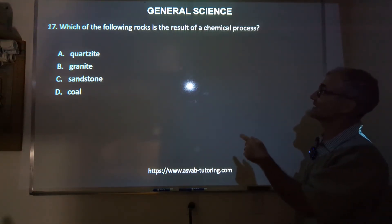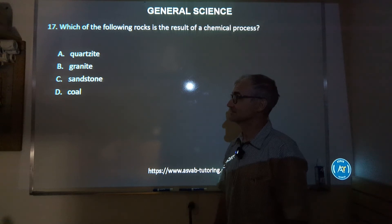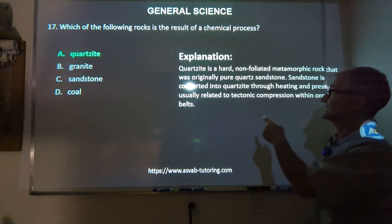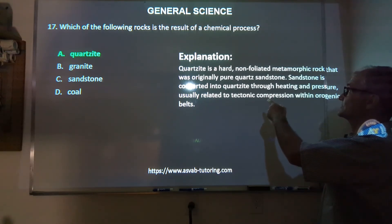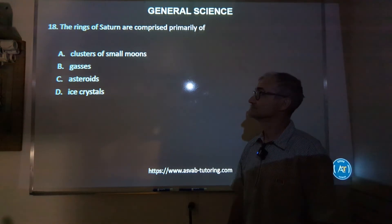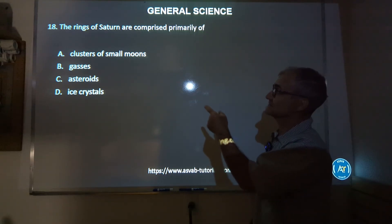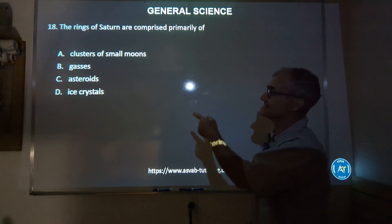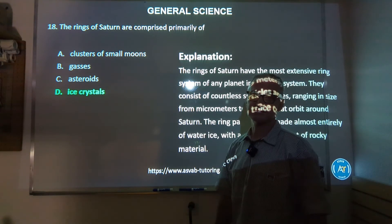Number 17: which of the following rocks is the result of a chemical process? Quartzite, granite, sandstone, or coal? Correct answer: quartzite. Quartzite is a hard, non-foliated metamorphic rock that was originally pure quartz sandstone. Sandstone is converted into quartzite through heating and pressure. Number 18: the rings of Saturn are comprised primarily of clusters of small moons, gases, asteroids, or ice crystals? Correct answer is D, ice crystals.